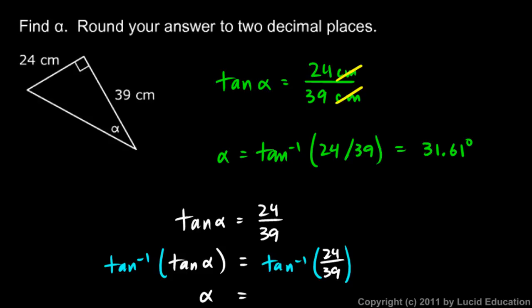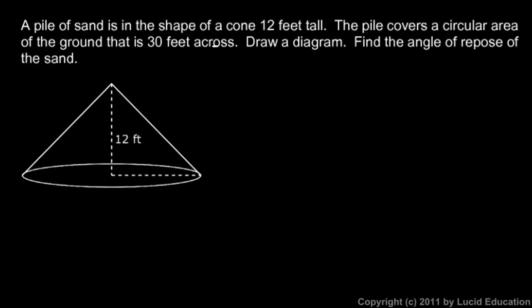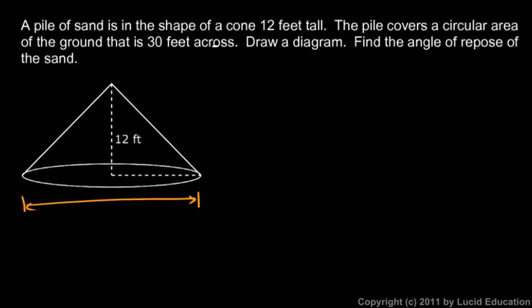Here's another problem: a pile of sand is in the shape of a cone 12 feet high. The pile covers a circular area that is 30 feet across — so this area is 30 feet across, meaning that distance is 30 feet.